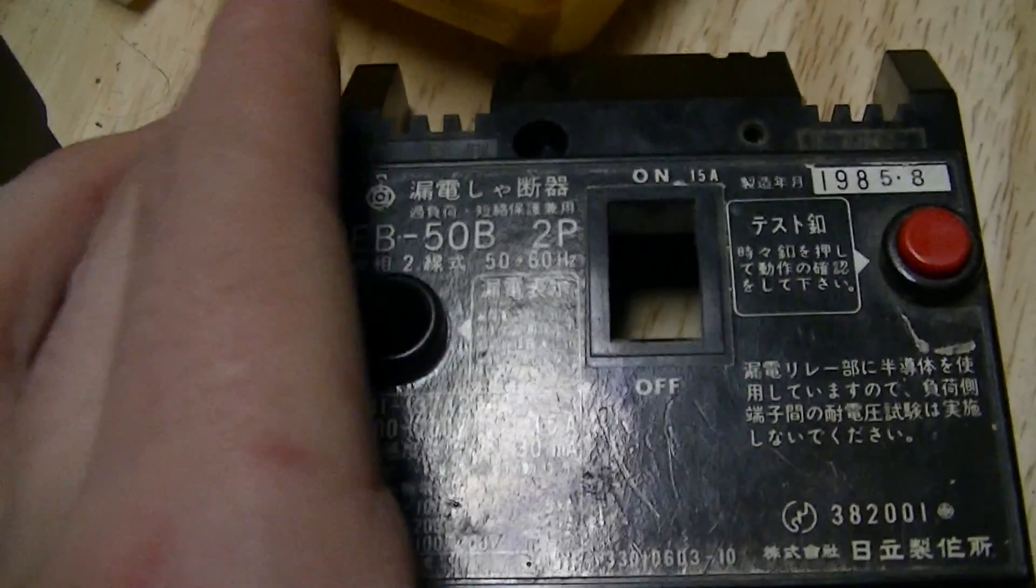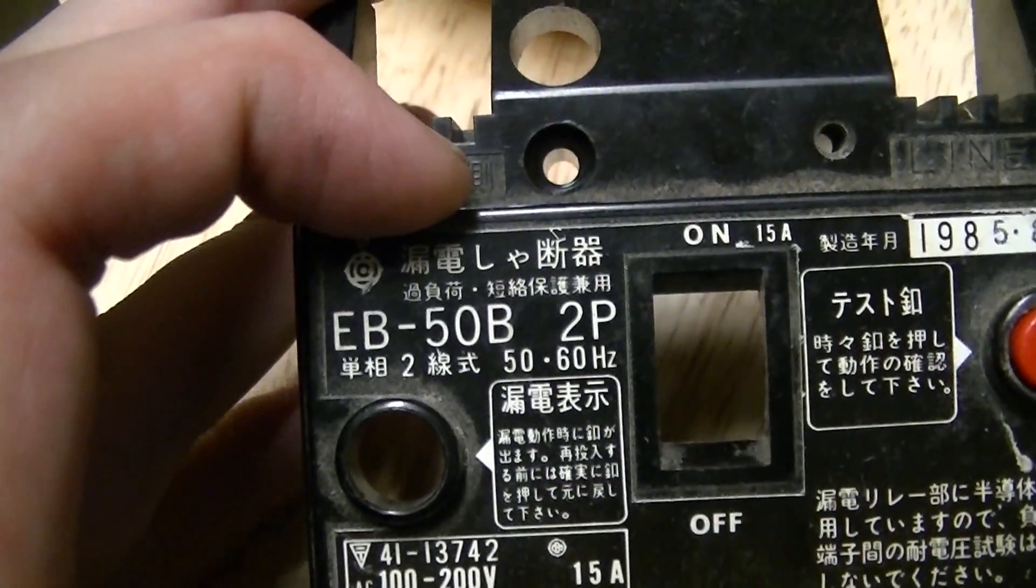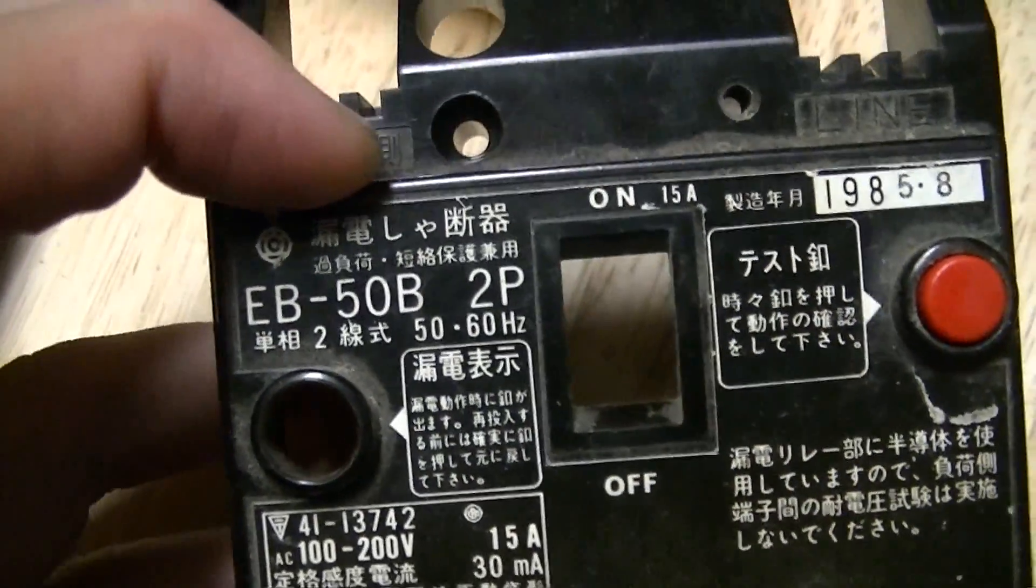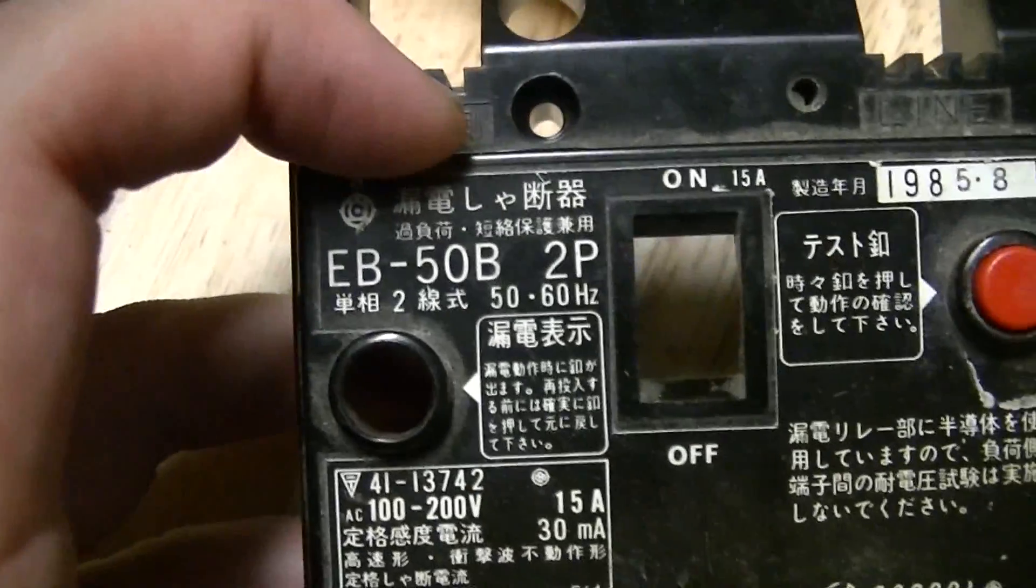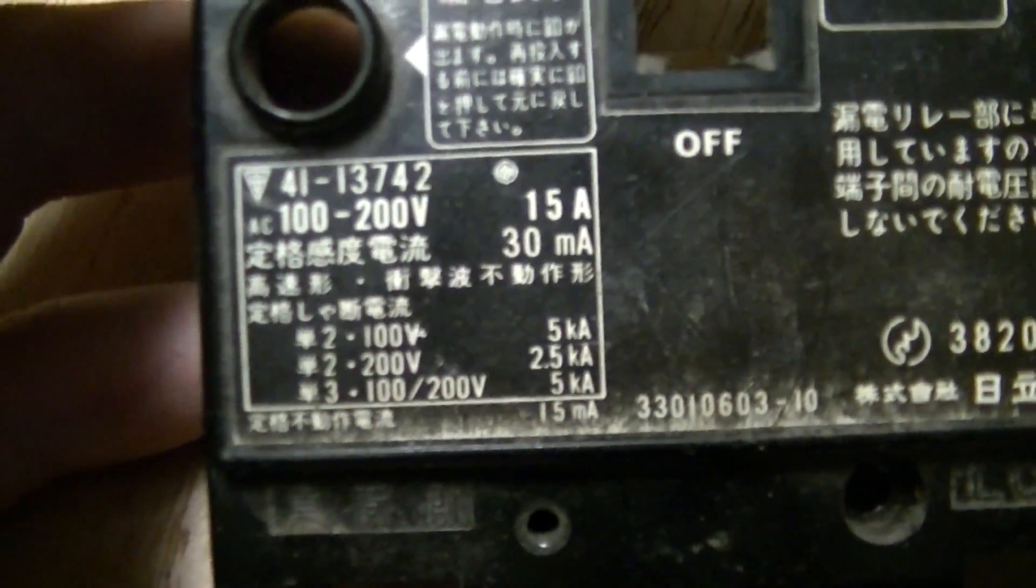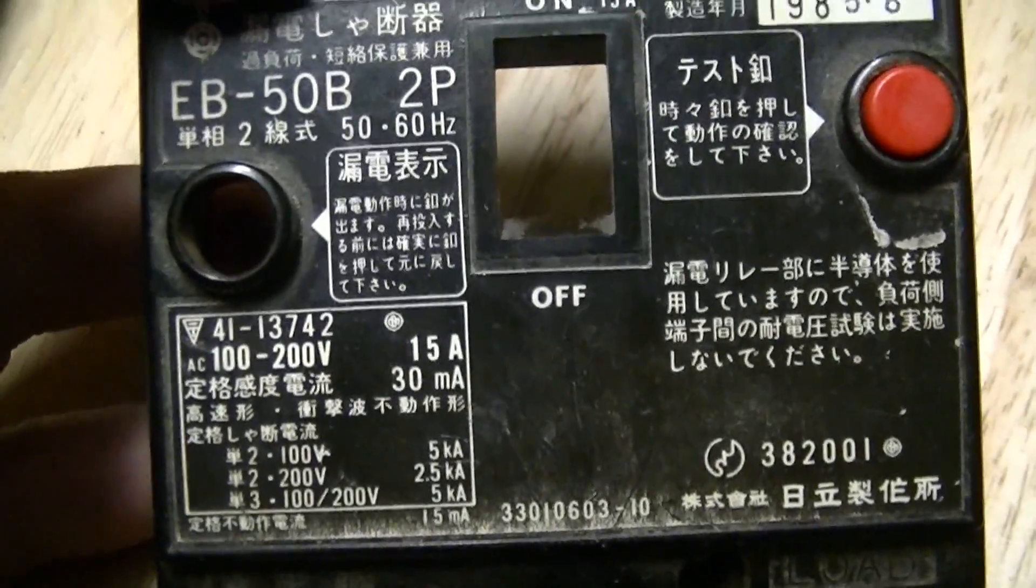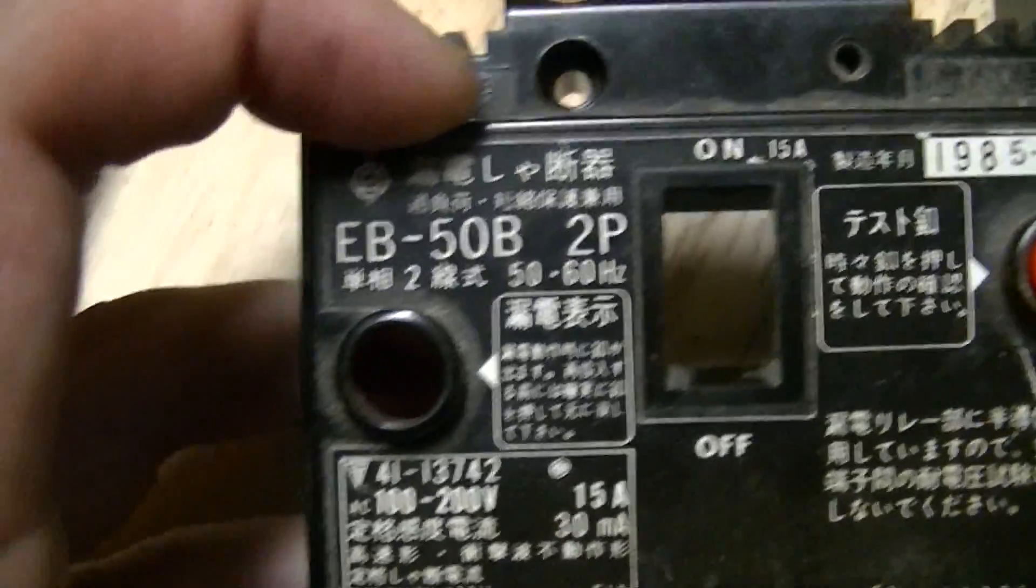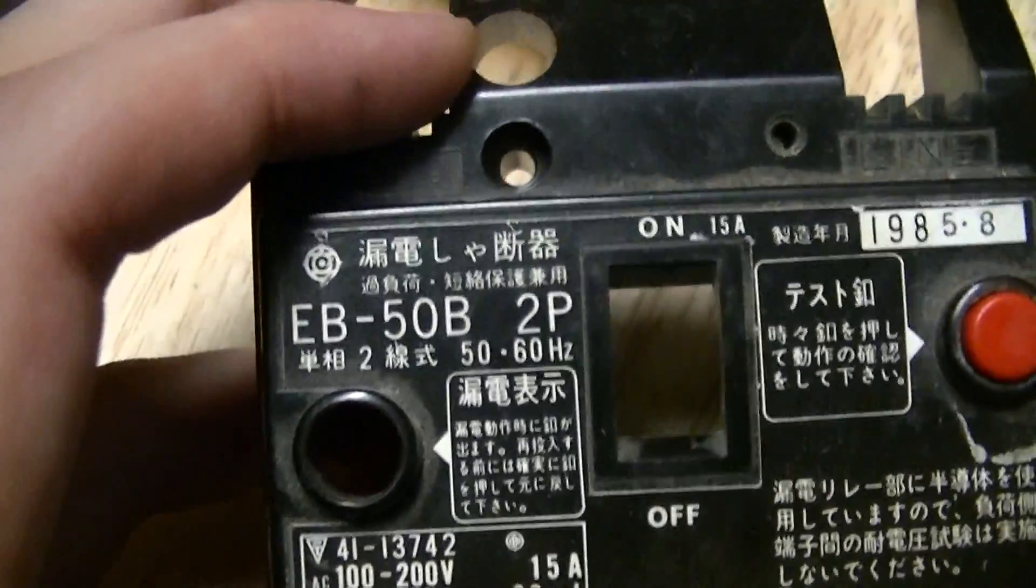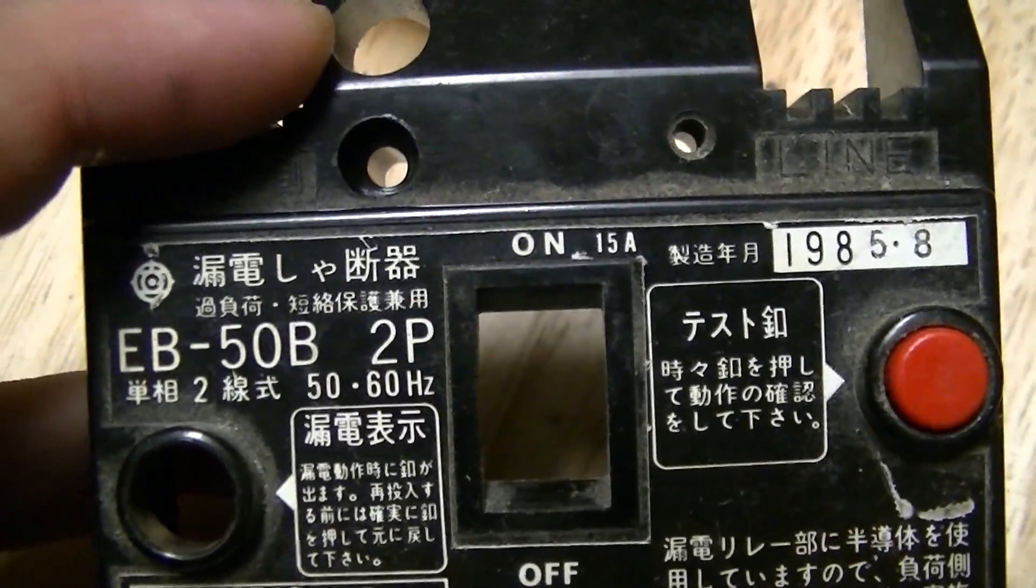It's the guts of a Hitachi EB50B two-pole circuit breaker, as you can tell from the markings and rated potentials. This thing was intended for the Japanese market, which is not surprising considering that Hitachi is a Japanese company, made August of 1985.